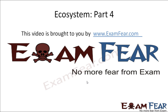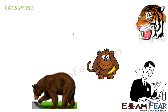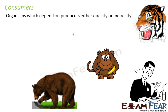Hello friends, this video on ecosystem part 4 is brought to you by examfear.com. The next category is consumer — they just consume food. They do not prepare food on their own, but they depend on other living organisms for their food. So these organisms depend on producers either directly or indirectly.